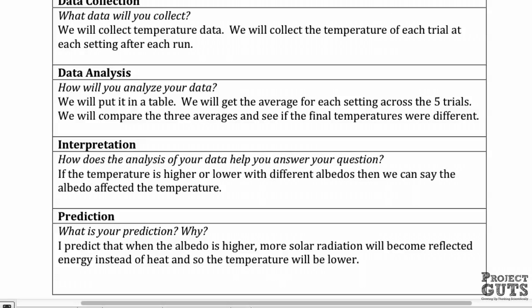Prediction. What is your prediction and why? My prediction will be that when the albedo is higher, more solar radiation will become reflected energy instead of heat, and the temperature of the world will be lower.